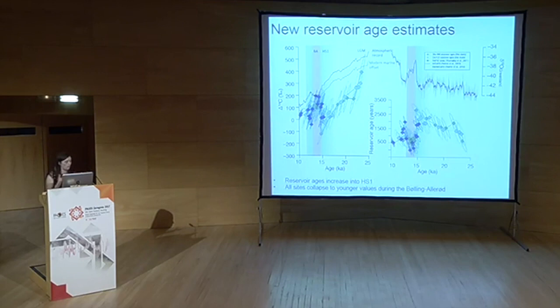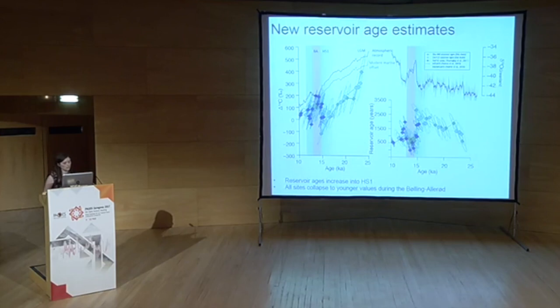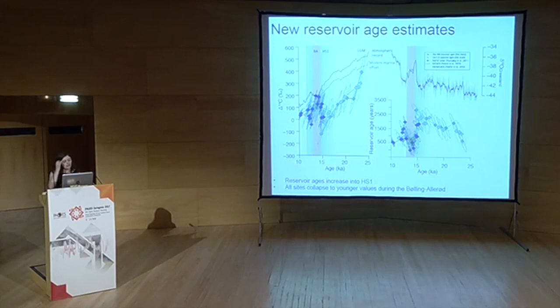In terms of reservoir ages: approximately 1,000 years during the LGM, increasing to around 2,000 years during HS1, before decreasing again to about 400 years during the Bølling-Allerød — similar to the modern. These 2,000-year reservoir ages in HS1 are significantly larger than modern values, and if not taken into account in radiocarbon-based age model construction, they could have a really large effect on the dated core.